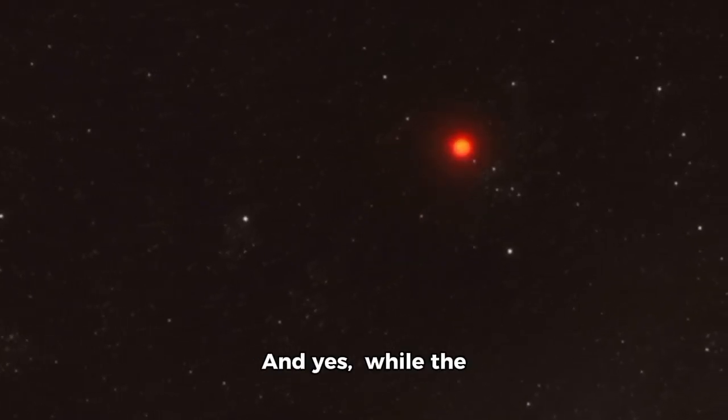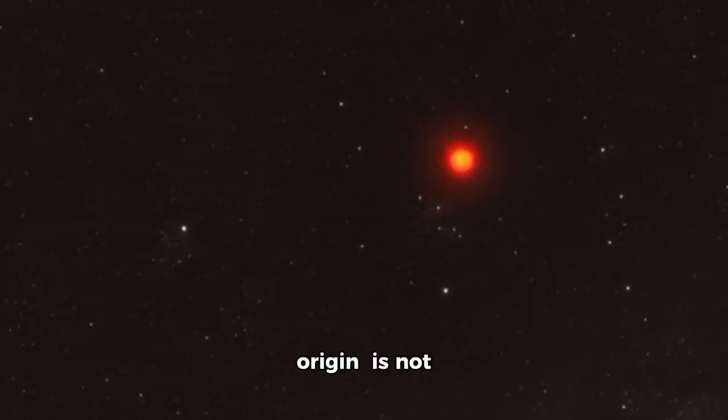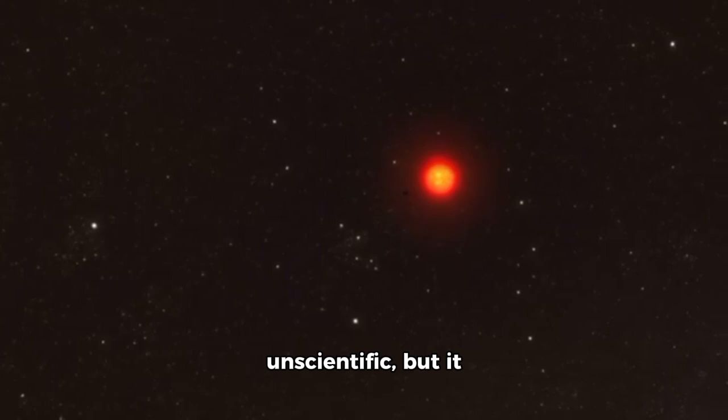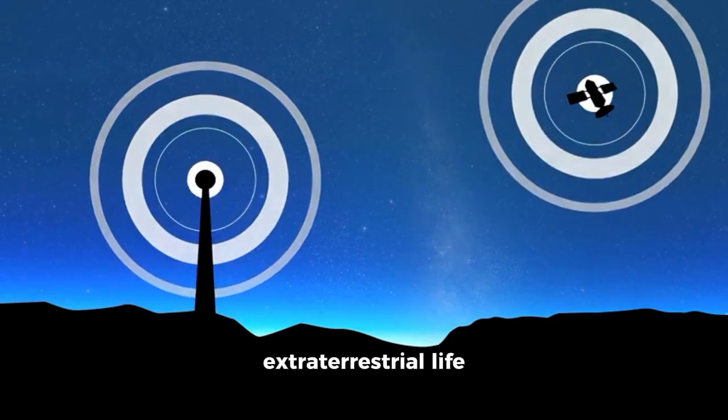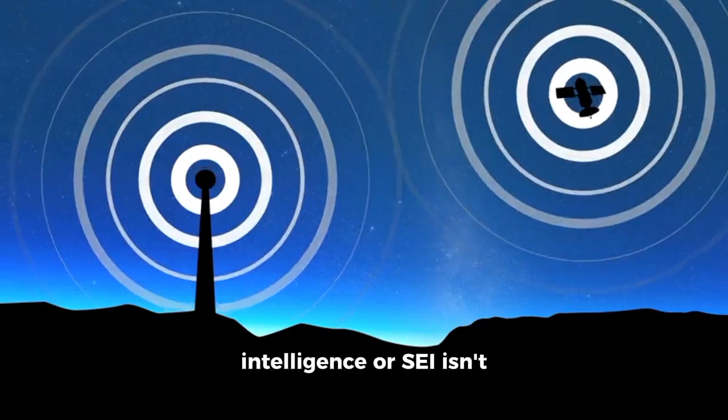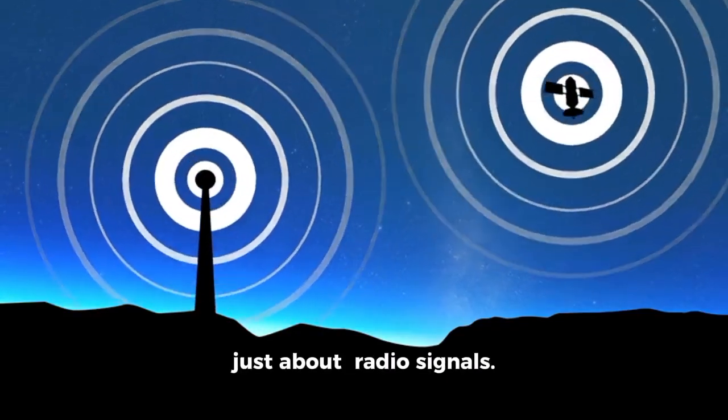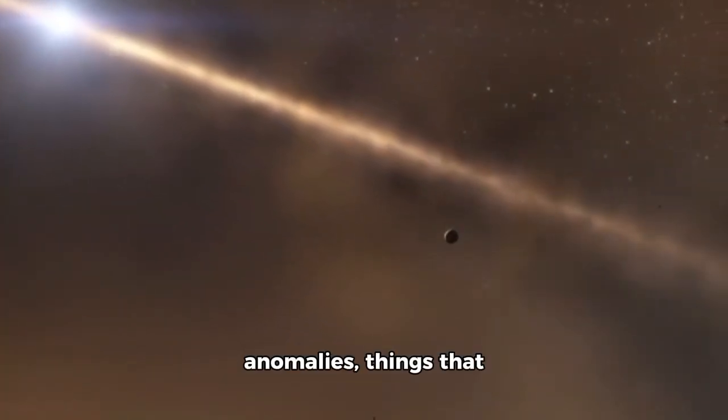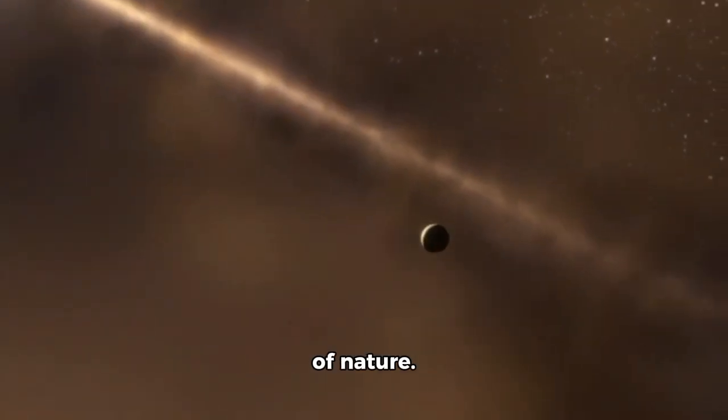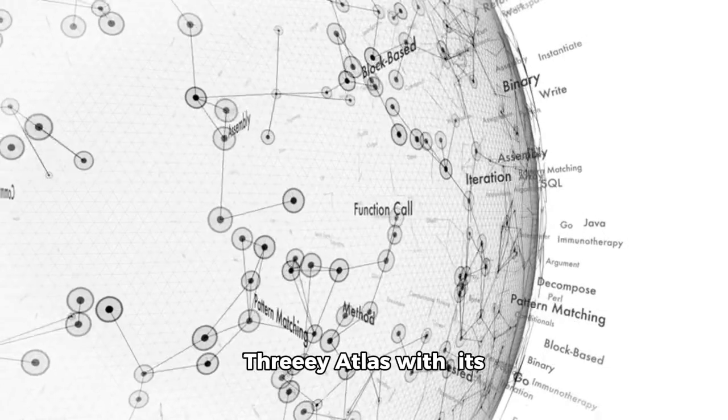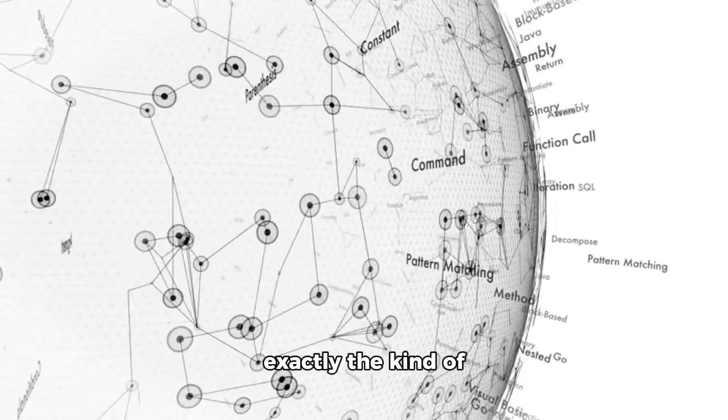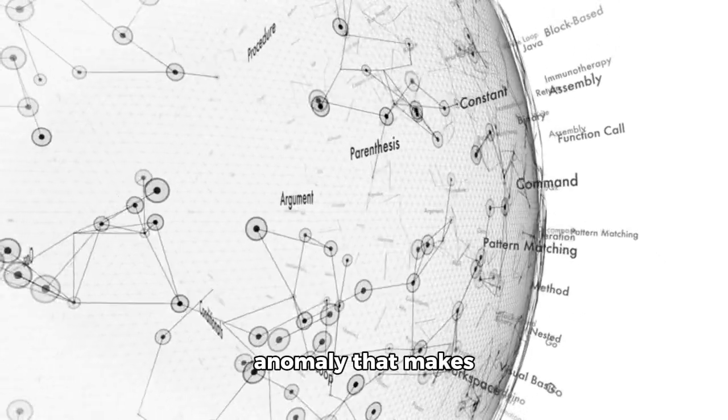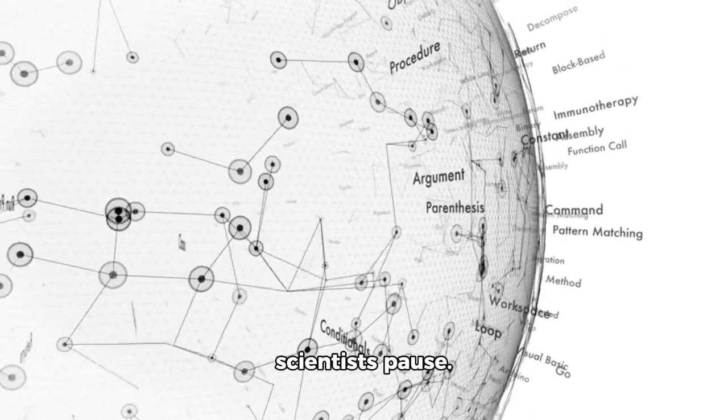And yes, while the idea of an artificial origin is speculative, it is not unscientific. The pursuit of extraterrestrial intelligence, or SETI, isn't just about radio signals. It's about looking for anomalies, things that don't fit the patterns of nature. 3i Atlas, with its precise course and sluggish activity, is exactly the kind of anomaly that makes scientists pause.